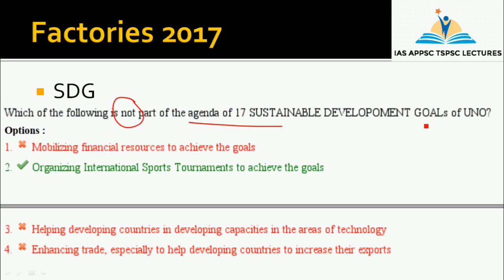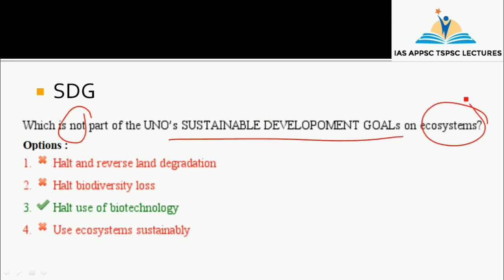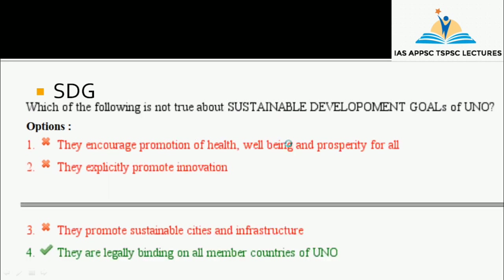Here is a question: which is not a part of the Agenda of 17 Sustainable Development Goals of UN? The keyword used to check which is not a part of UN's Sustainable Development Goals is the SDG on ecosystems. Revise the easy answers and note different question formats.